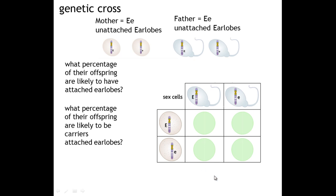We are going to put these together to form the possible genotype of the offspring. In this case it would be big E, big E — a homozygous individual. In this case, big E from the mum and small e from the father makes it heterozygous. Here, small e from the egg and big E from the sperm is again heterozygous. And in this last case, small e, small e — that's a homozygous individual because it has two recessive alleles.